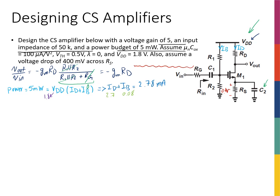Since RS has 400 mV across it and ID flows through it: RS × ID = 0.4 V, with ID = 2.7 mA. Therefore RS = 400 mV / 2.7 mA ≈ 148 Ω.